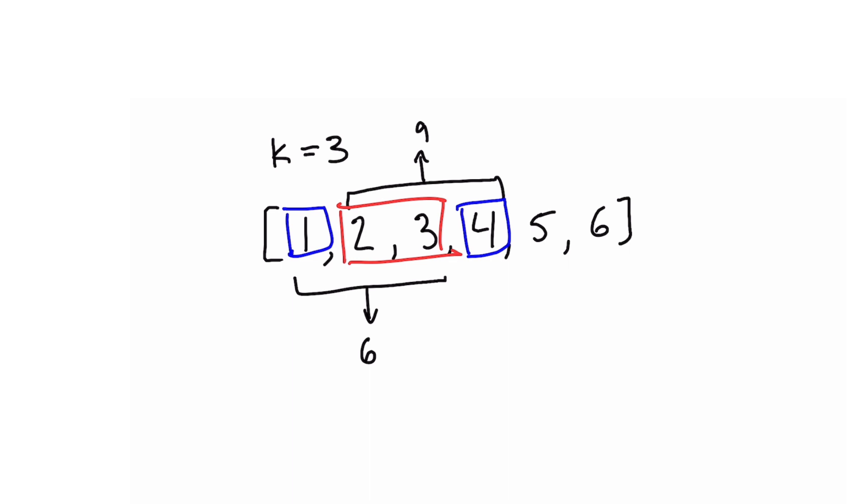In the first subarray we include the 1 but we do not include the 4, and then in the second subarray we do not include the 1 but we do include the 4. So to get from 6 to 9 we can say 6 minus 1 plus 4, because we excluded the 1 and we included the 4. That way, by just doing a little bit of arithmetic, we were able to get that new sum without having to sum up any of these values in the middle.